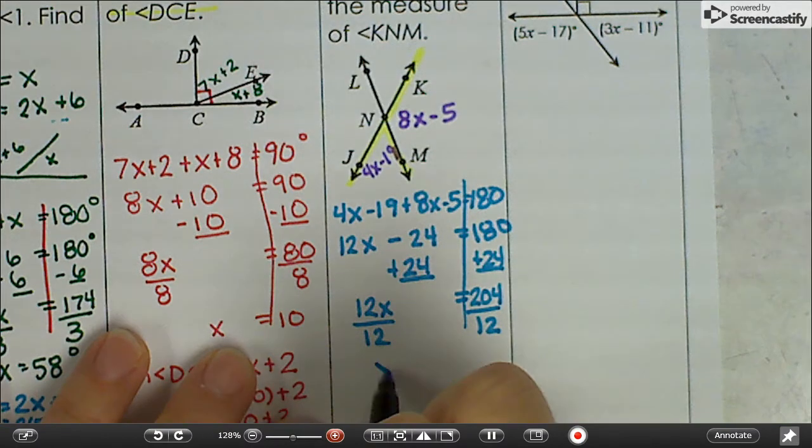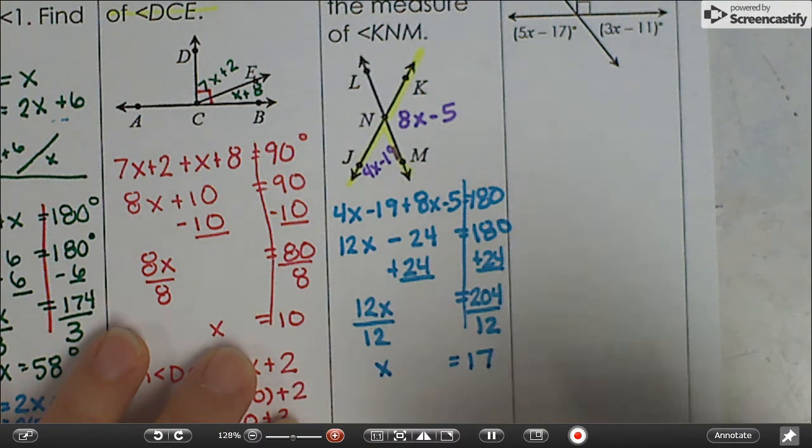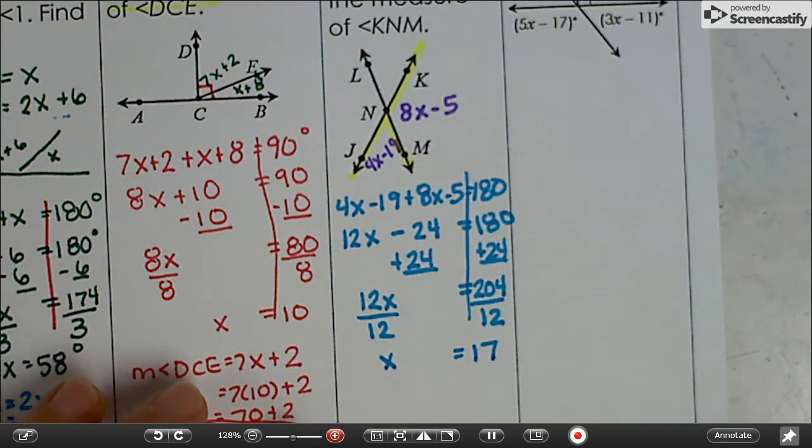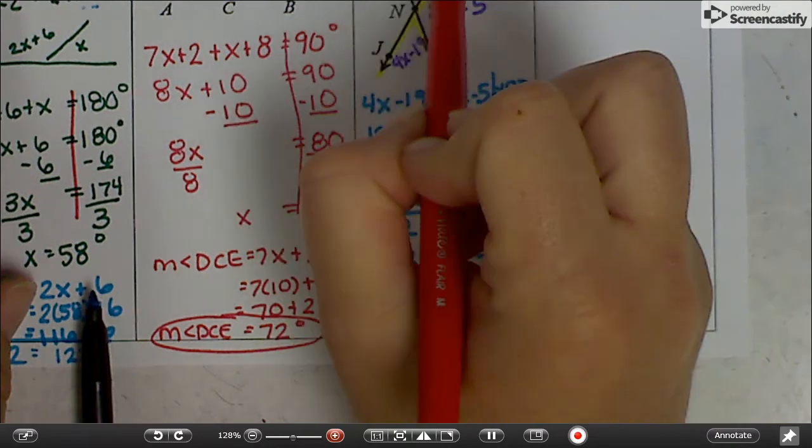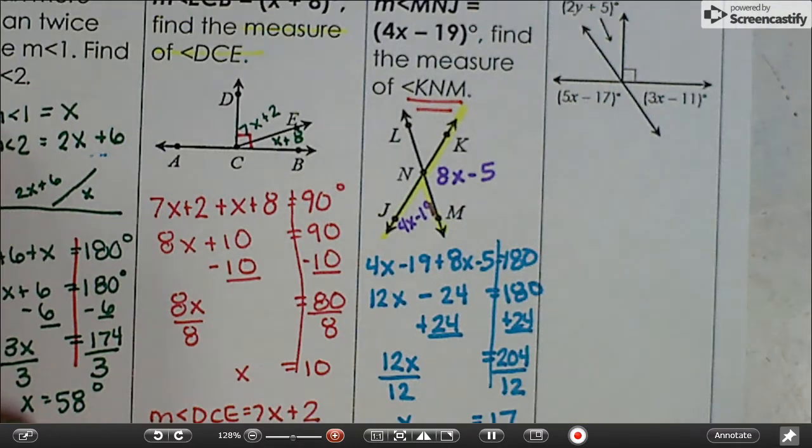So this ended up being 17, and that's x. And remember, the problem says we want the measure of KNM.